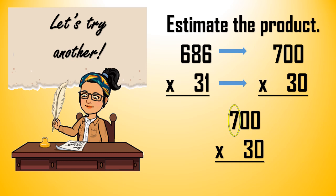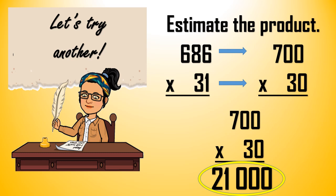Next step is to multiply the non-zero digits, and our non-zero digits are 7 and 3. So we multiply 7 and 3, we get 21. And then next step is to count the number of zeros. Let's count, we have 1, 2, 3. There are 3 zeros in the factors. So we affix 3 zeros in the product. 1, 2, 3. So our answer is 21,000.